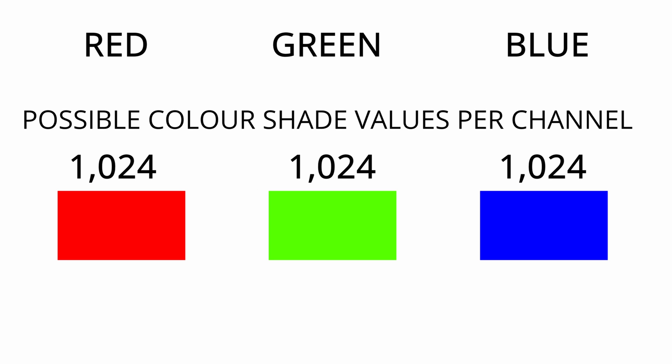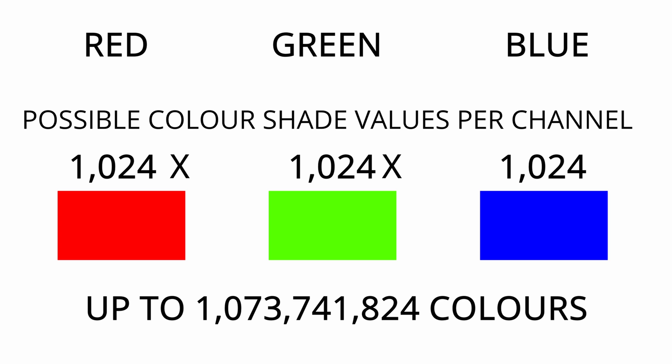With 10-bit colour, your RGB channels — red, green and blue — the possible colour shade values go up to 1,024 for each of your colour channels. So it's five times the amount per channel of variation in colours that you're getting, from your reds to your greens and blues — you're getting a huge amount more.